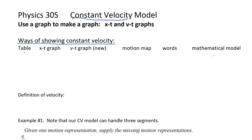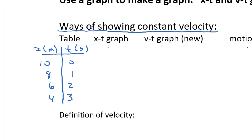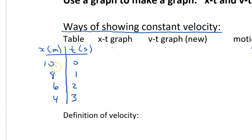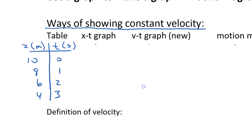So what does a table of values look like? Here's an example of an object starting at a position — I'm using X for this — starting at a position of 10 meters at time equals zero. You can see that as each second goes by, it's changing its position by two meters. Here I've made a little sketch of the object starting at 10 meters and ending at four meters three seconds later on a position-time graph.